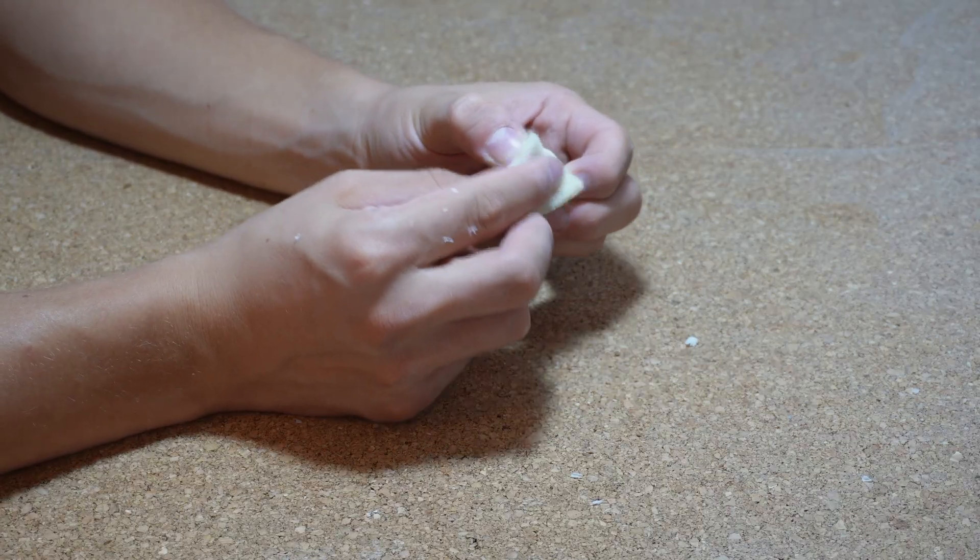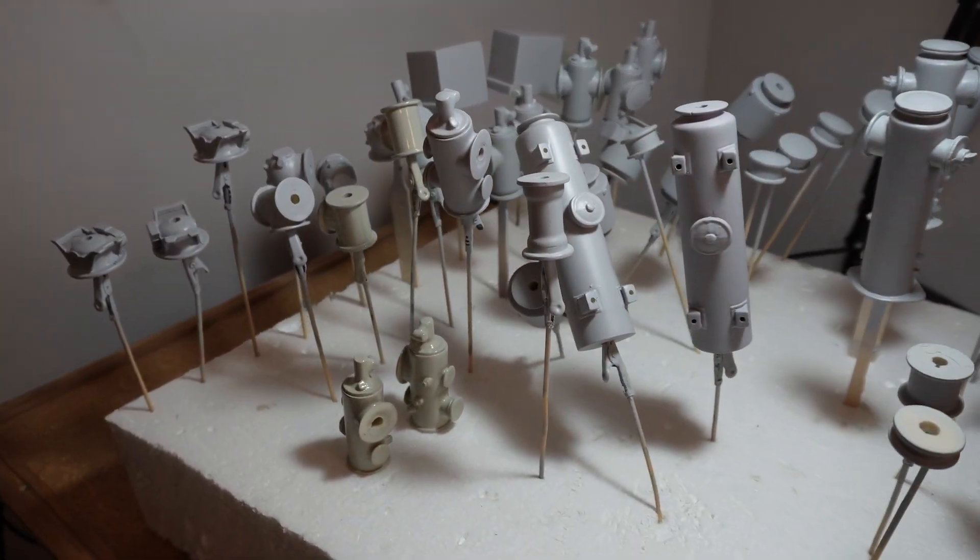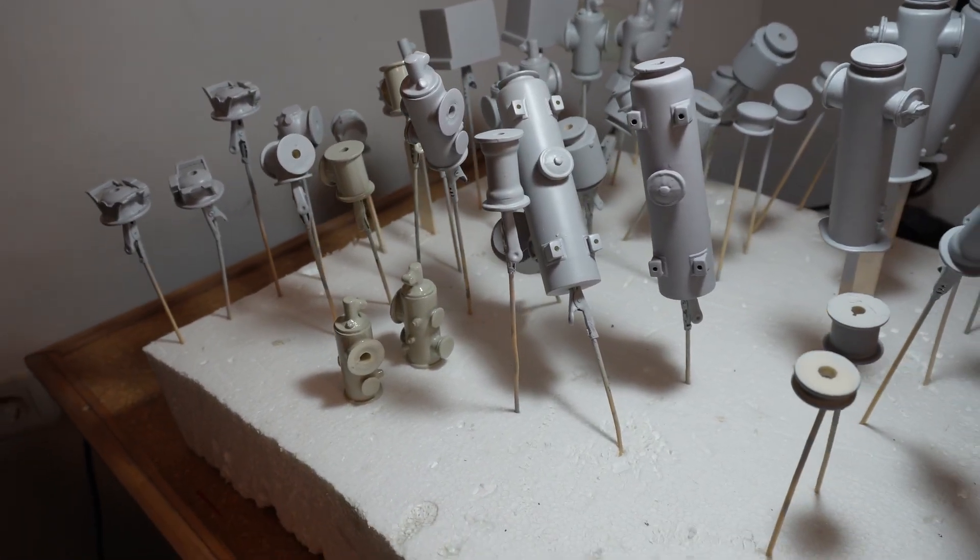Each model is then carefully sanded, coated, sanded again, and base-coated once more until the surface is smooth and ready for molding.